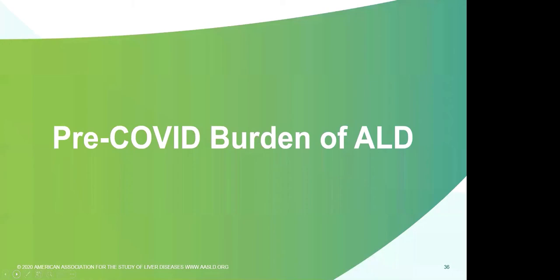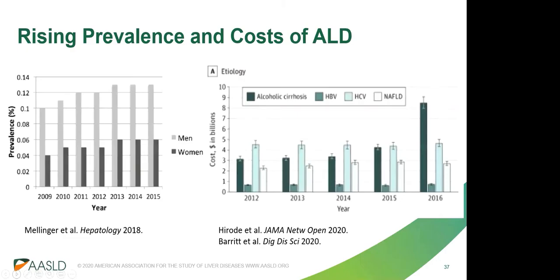Before delving into the potential impact of COVID-19 on alcohol-associated liver disease, it's worth noting the high and increasing ALD burden prior to COVID-19. National commercial claims data show that the diagnosis of alcohol-associated cirrhosis is on the rise. Despite relatively modest increases in prevalence, inpatient costs attributable to ALD have skyrocketed — according to recent estimates from the national inpatient sample, inpatient costs from ALD now total more than every other liver disease etiology combined.